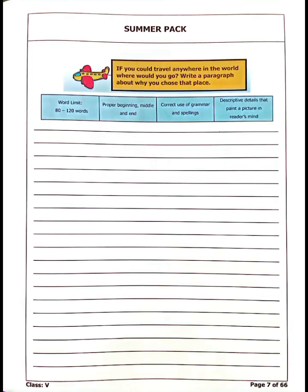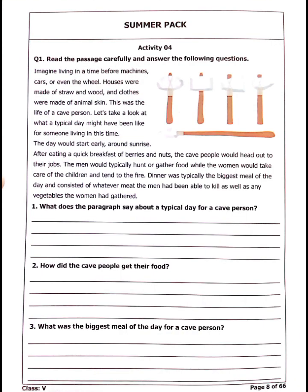In the next page, there is a creative work. If you could travel anywhere in the world, where would you go? Write a paragraph about where you chose that place. You have to write about any place where you have gone or where you want to go, and also why you chose that place. There is a word limit of 80 to 120 words, proper beginning, middle and end, correct use of grammar and spellings, and you have to give descriptive detail that paints a picture in the reader's mind.